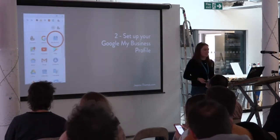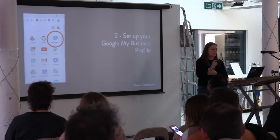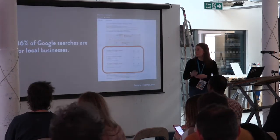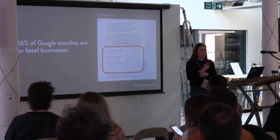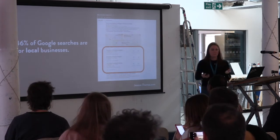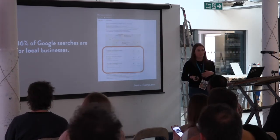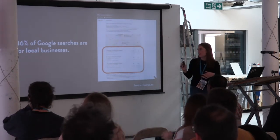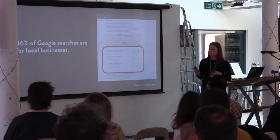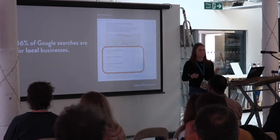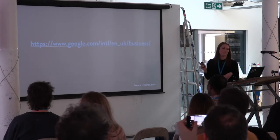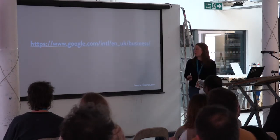Step two is setting up your Google My Business profile. This is really important because 46% of Google searches are now for local businesses — search terms such as 'hairdressing near me' or 'plumber in Glasgow.' In order to appear in the top search results on mobile and desktop, it's really important you have your Google My Business profile set up. You do that by visiting the URL or just Googling 'My Business Page.'